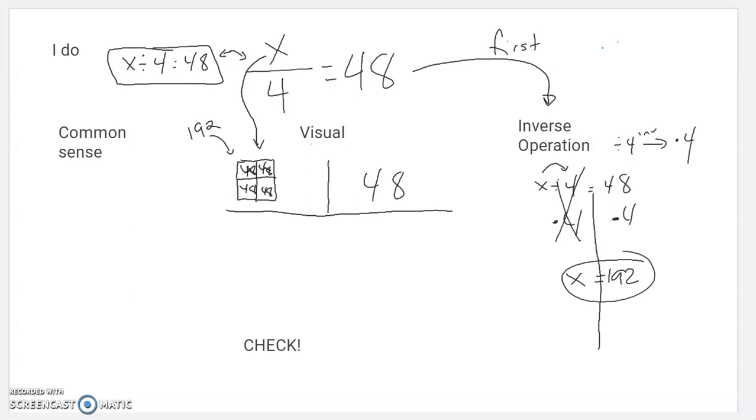Again, that might be a little too confusing, and you may just not like this strategy on this one, and I totally get it. So I need the whole X, the whole unknown, to be 192. So again, always a good idea to check.